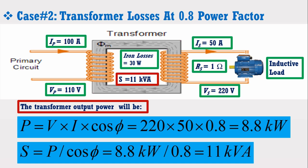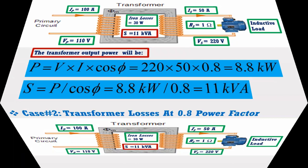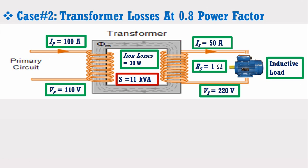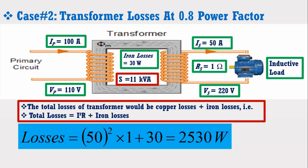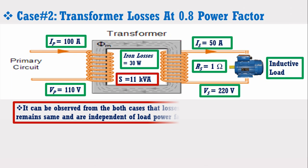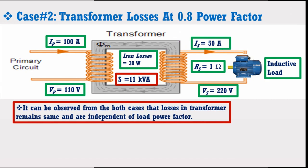However, if we calculate the apparent power for this case by dividing the active power by the power factor, it is observed that the apparent power in Case 1 and Case 2 remains the same, whereas active power changes with respect to the power factor of the load. Therefore, if kW is used as the rating of the transformer, one may not be clear about how much power the transformer will supply. Calculating the losses at 0.8 power factor — total losses equal copper losses plus iron losses. There is no involvement of power factor in the expression. Putting the values of secondary current and resistance, the transformer has total losses of 2530 W. It can be observed from both cases that losses in the transformer remain the same and are independent of load power factor.